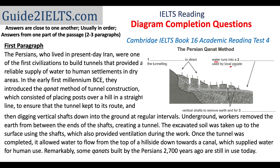Now I go to the first paragraph of the passage. Just by glancing at it, I can see vertical shafts mentioned and tunnel mentioned before that, so I'm pretty sure I'm at the right place. The passage says they introduced the Kanath method of tunnel construction — the Persians — which consisted of placing posts over a hill in a straight line to ensure that the tunnel kept to its route. The tunnel kept to its route could mean to direct the tunneling, which means the answer is 'posts,' as mentioned in the passage as placing posts over a hill in a straight line.